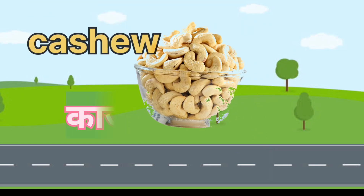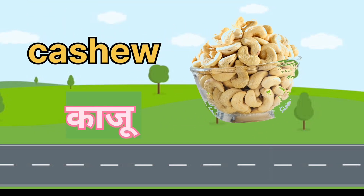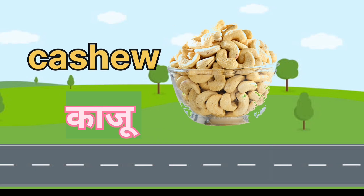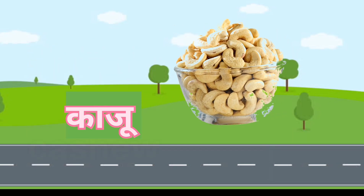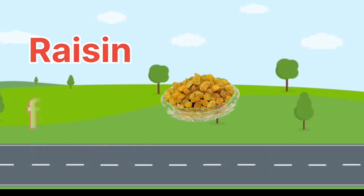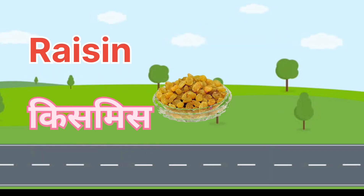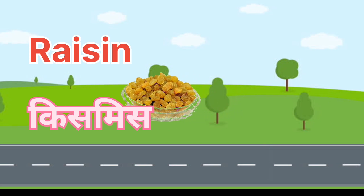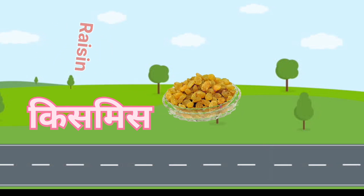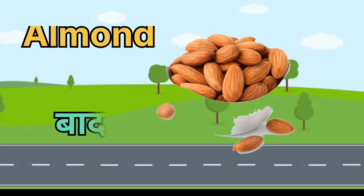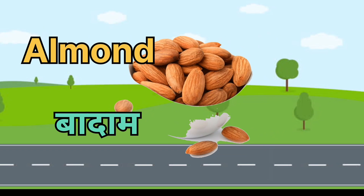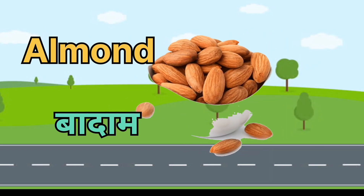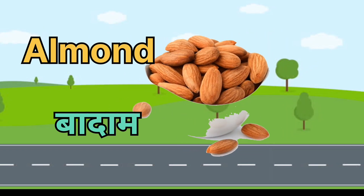Cashew. Cashew means Kaju. Raisin. Raisin means Kismis. Almond. Almond means Badam.